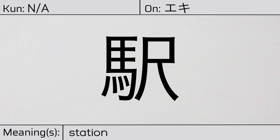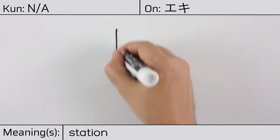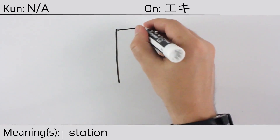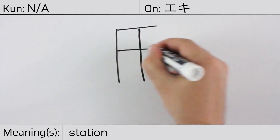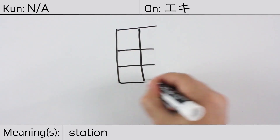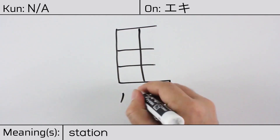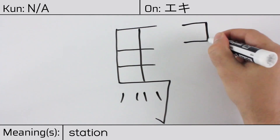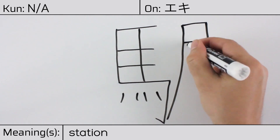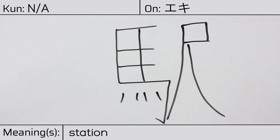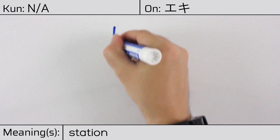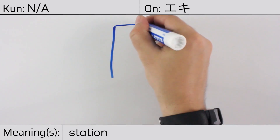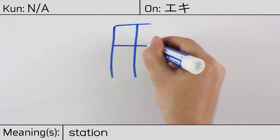Here is the stroke order. This character is made up of the following radicals or parts: Horse, uma, on the left, and the flag radical on the right.